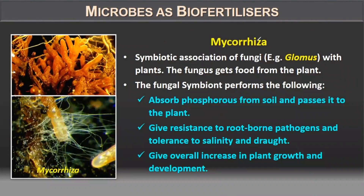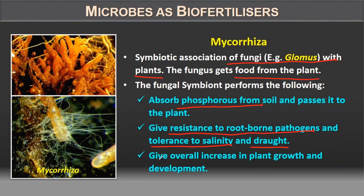Another biofertilizer is Mycorrhiza — a symbiotic association of fungi with plants. The fungus gets food from the plant and the plant gets protection from pathogens. The fungal symbiont absorbs phosphorus from the soil and passes it to the plant, gives resistance to root-borne pathogens, tolerance to salinity and drought, and provides an overall increase in plant growth and development.